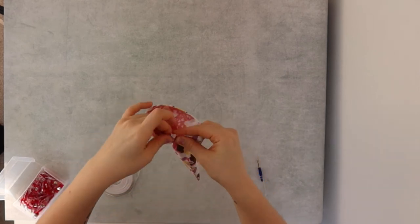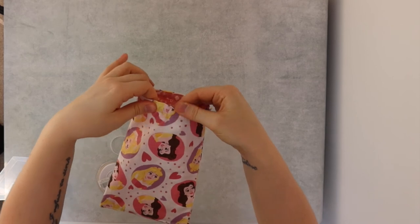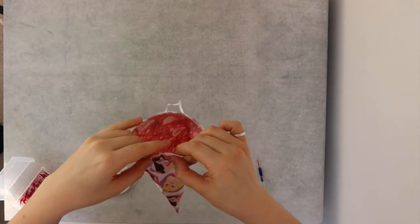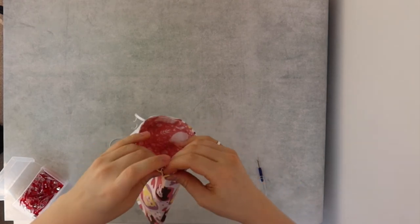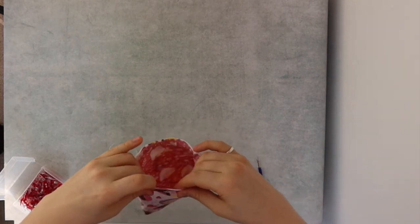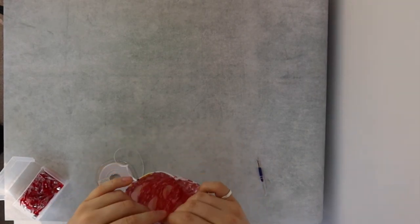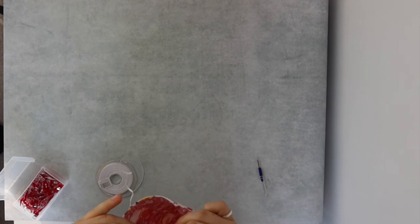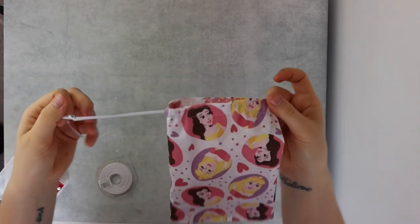So start pushing it through, and I like to push with one thumb and then kind of pull back the fabric. This allows the paper clip to keep moving through and not get too tangled up. And then you're back at the beginning.